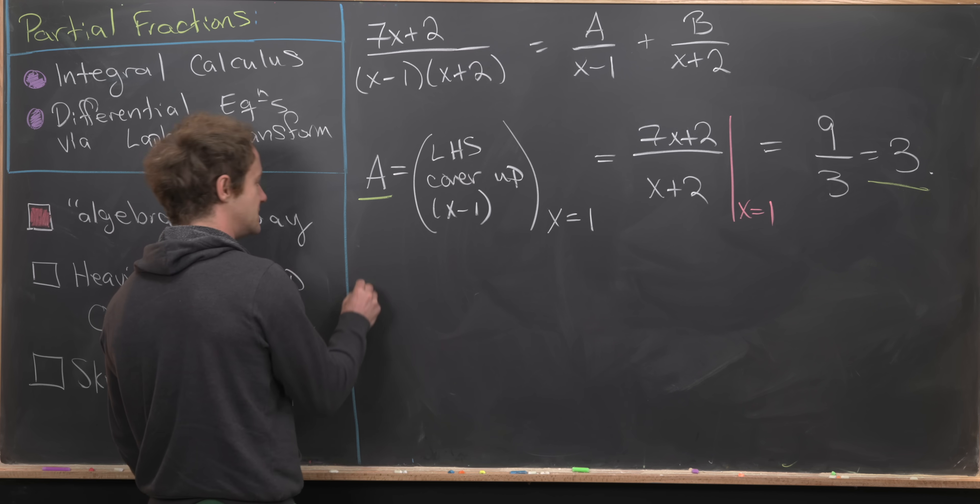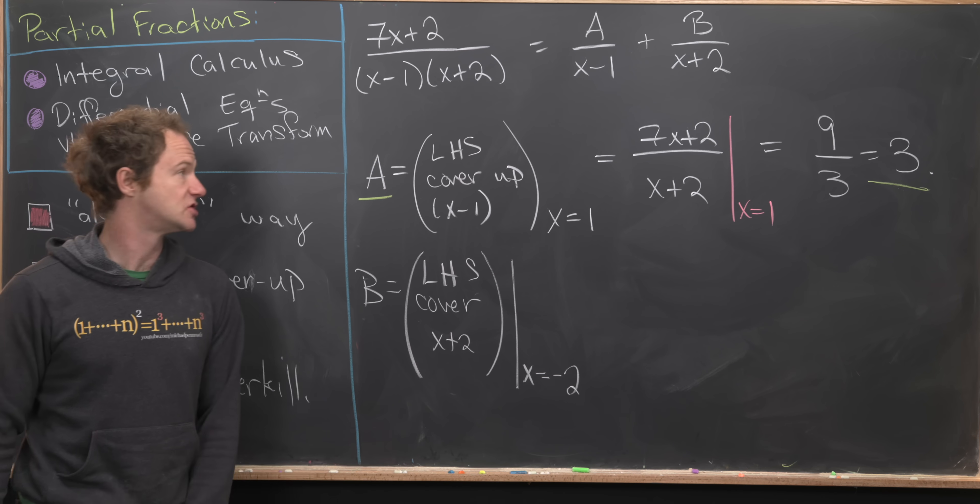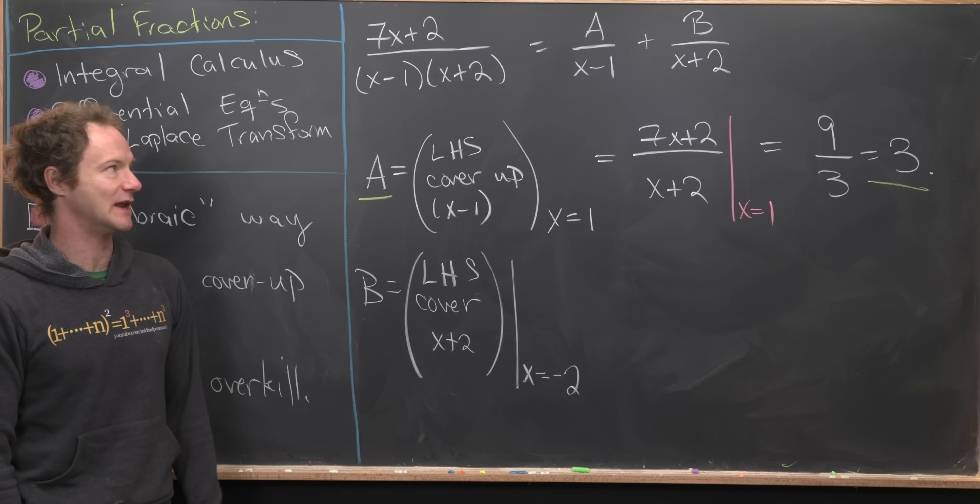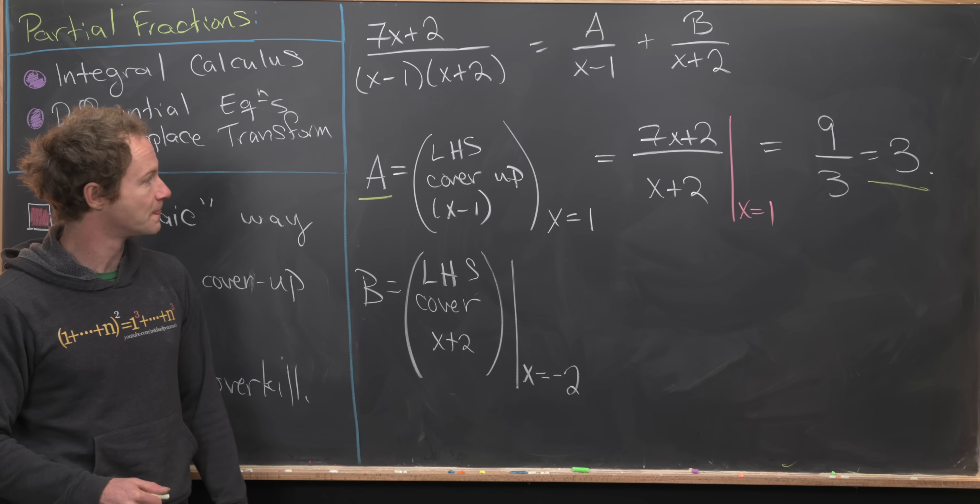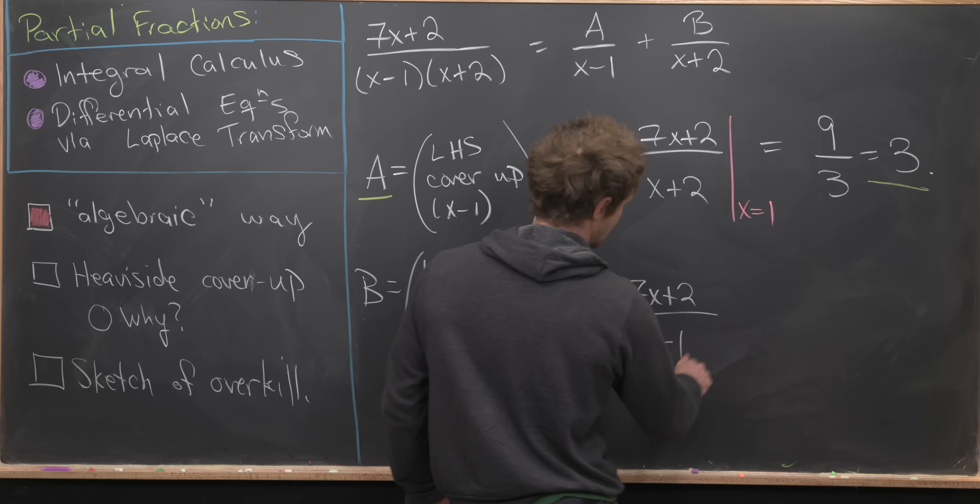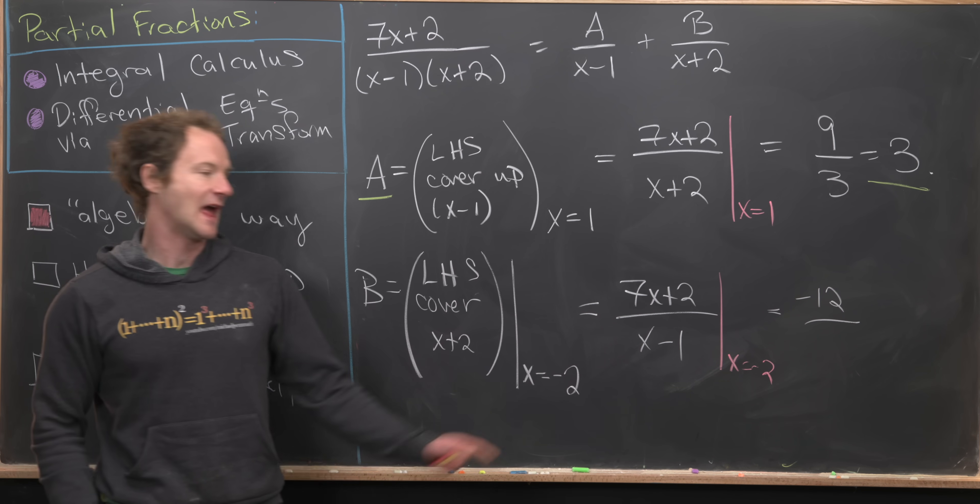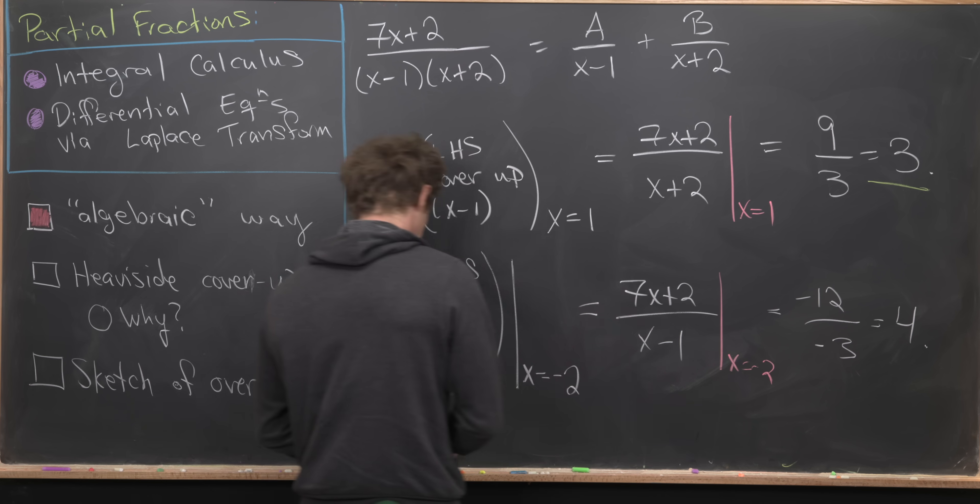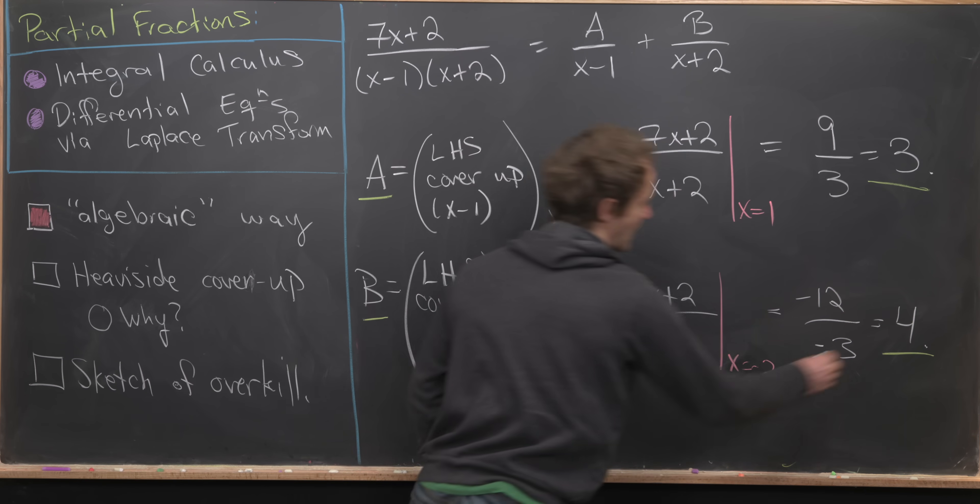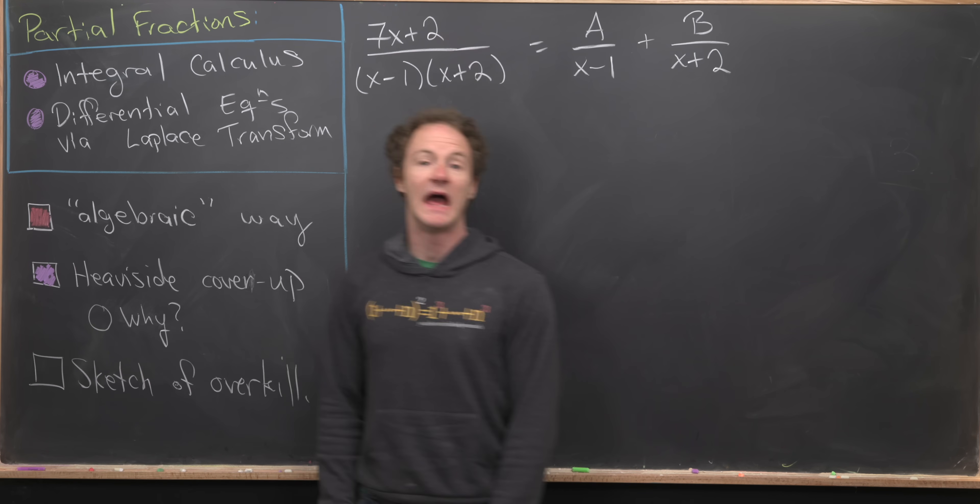Now we can do the same thing to find B. B happens to be the left-hand side where we cover up the (x plus 2) term and set x equal to negative 2. That'll give us (7x plus 2) over (x minus 1), evaluated at x equals negative 2. Plugging in negative 2 gives us negative 12 in the numerator and negative 3 in the denominator, which gives us 4, exactly what we had on the last board. We've reproduced our algebraic solution using Heaviside's cover-up method, and now we're ready to look at why it works.